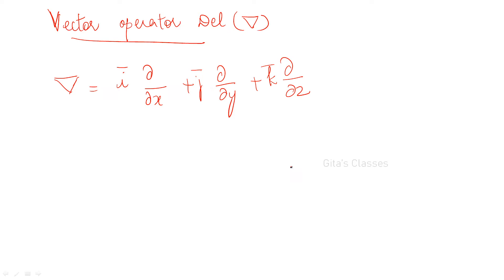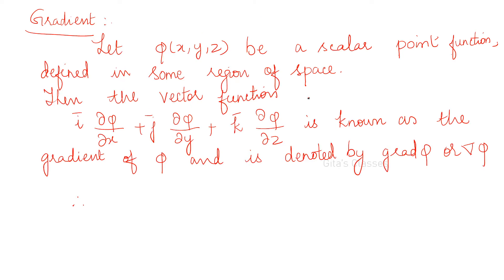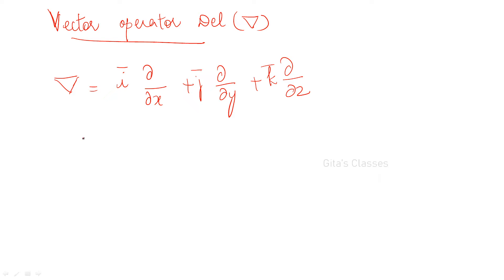Next, we are going to see one important operator — the vector differential operator, our vector operator del. Del is denoted by this symbol and means i·(∂/∂x) + j·(∂/∂y) + k·(∂/∂z). This you have to remember throughout this unit. This is just an operator; it can be applied on a scalar point function or on a vector point function. Depending on which function you apply it to, the names will vary.